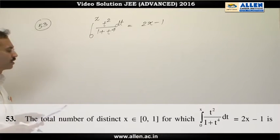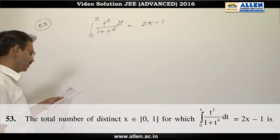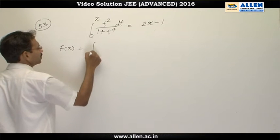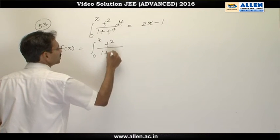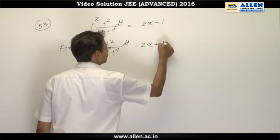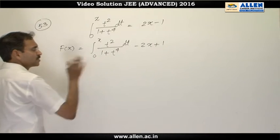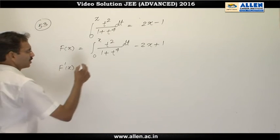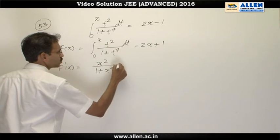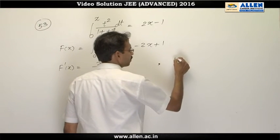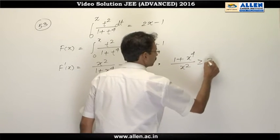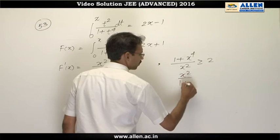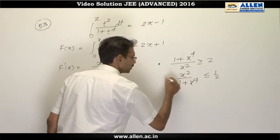In question number 53, we have been asked to find the total number of solutions of this equation in the closed interval [0, 1]. We will consider a function F(x) equals the integral from 0 to x of t squared over 1 plus t raised to the power 4 dt, minus 2x plus 1. This is a continuous function. We calculate its derivative to identify its nature: F'(x) equals x squared over 1 plus x raised to the power 4 minus 2. We know that 1 plus x raised to the power 4 over x squared is greater than or equal to 2, so the reciprocal x squared over 1 plus x raised to the power 4 is less than or equal to one half.